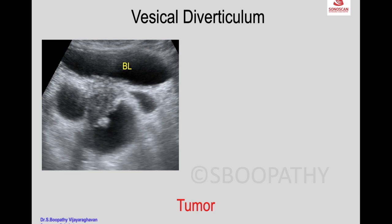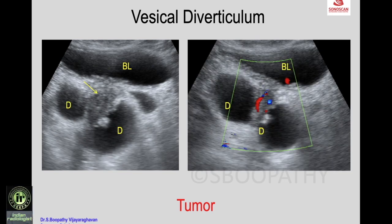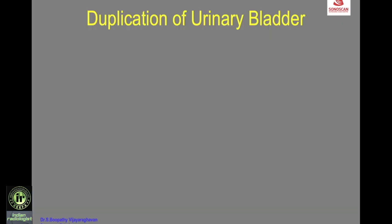Very rarely, there can be a tumor within the diverticulum. Here you see the bladder and diverticulum with an irregular mass at the neck of the diverticulum, dividing it into three compartments. Color Doppler shows flow within the mass, confirming this is a malignant tumor of the diverticulum.